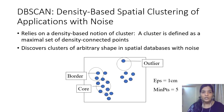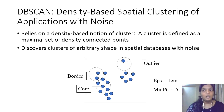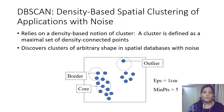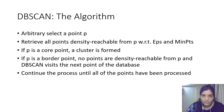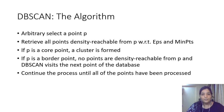DBSCAN — Density-Based Spatial Clustering of Applications with Noise — relies on a density-based notion of a cluster. A cluster is defined as a maximal set of density-connected points. It discovers clusters of arbitrary shapes. The algorithm: select a point P, retrieve all points density reachable from P with respect to epsilon and minimum points. If P is a core point, a cluster is formed. If P is a border point, no points are density reachable from P and DBSCAN visits the next point. Continue until all points are processed.